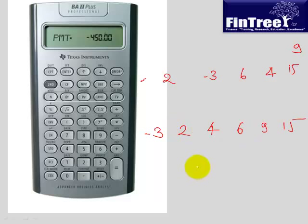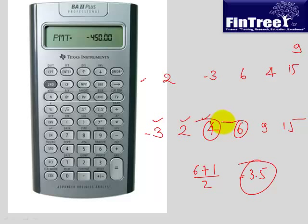If you use n plus 1, 6 values, 6 plus 1 by 2 is giving you 3.5. So you want to find out the 3.5th value in the center. So what is the 3.5th value? 1, 2 and 3, this is the third value. This is the fourth value. So 3.5th value would be the mean of these two numbers, and mean of these two numbers would be 5. So median of this data is 5.